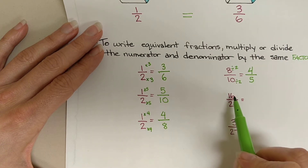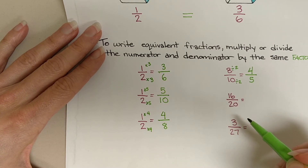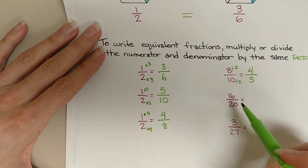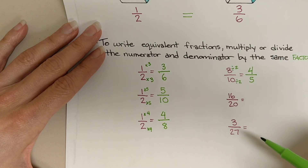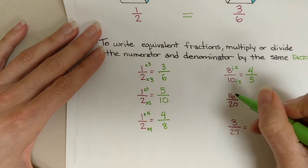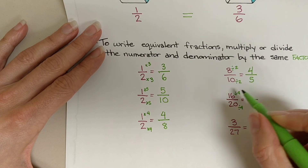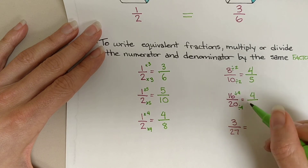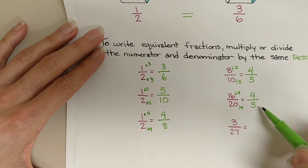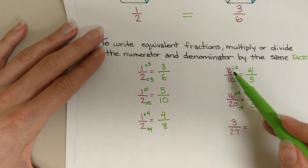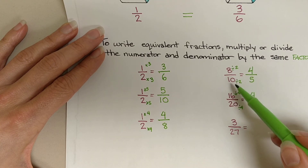The next one here, we've got sixteen twentieths. We could divide by two, but we can also see if we can divide by something bigger. Knowing my multiples and factors, I can see that sixteen and twenty are both multiples of four, so I should be able to divide by four. Sixteen divided by four gives me four, and twenty divided by four gives me five. So sixteen twentieths is equivalent to four fifths, which means that sixteen twentieths is also equivalent to eight tenths. If they're both equivalent to four fifths, then they must be equivalent to each other.